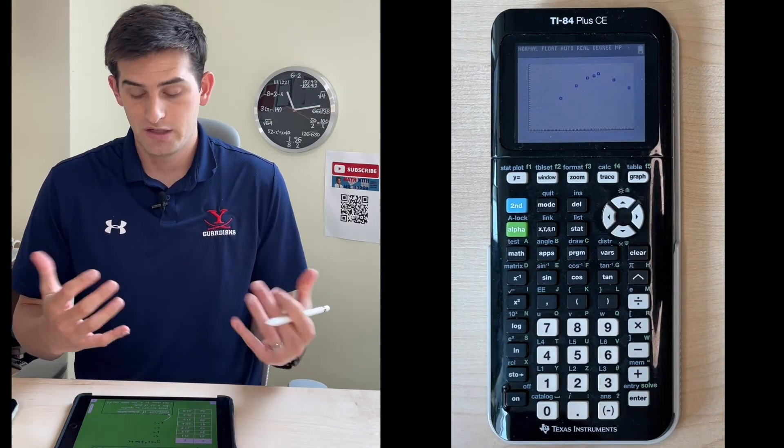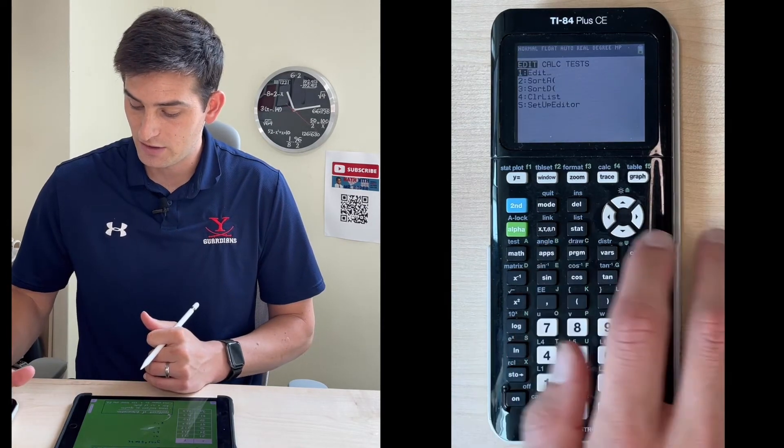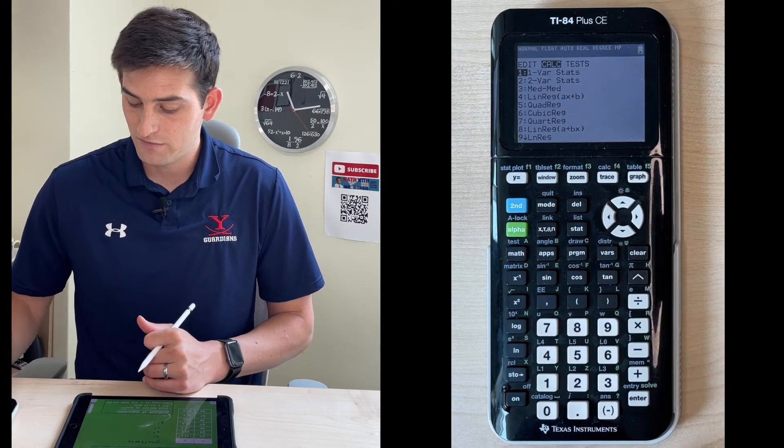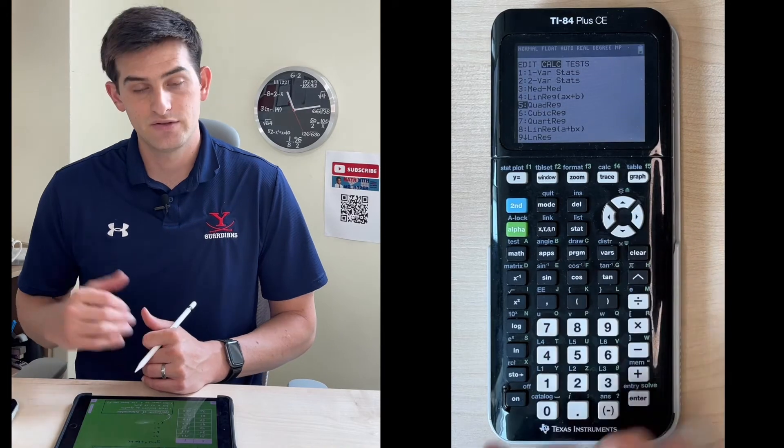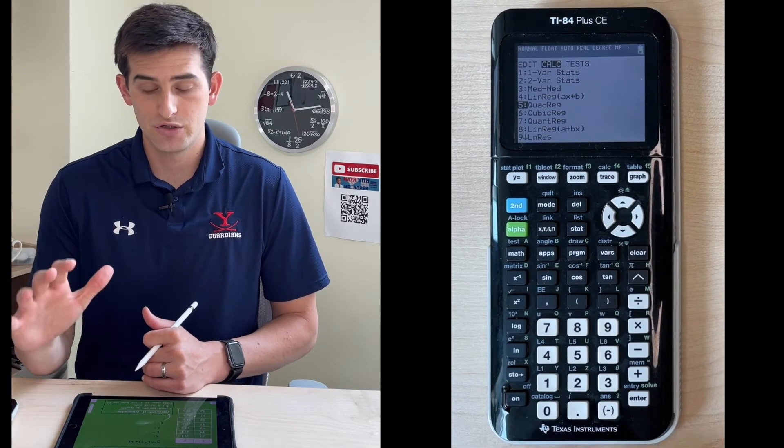Now to find the quadratic regression, we're going to hit stat and we're going to go to calculate. We want the fifth option down here, so we can go down to quadratic regression and hit enter, or you can just hit five.